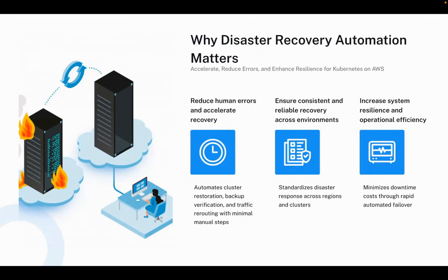Let me start by explaining why automation plays such an important role in disaster recovery. When outages occur, time is critical, and manual actions often slow things down or introduce errors. Automation removes this uncertainty — it accelerates the recovery process, ensures every step is performed consistently, and reduces the stress on engineers during high-pressure situations. By automating the entire pipeline, we create a highly repeatable and reliable process that performs the same way every time, even in chaotic scenarios.